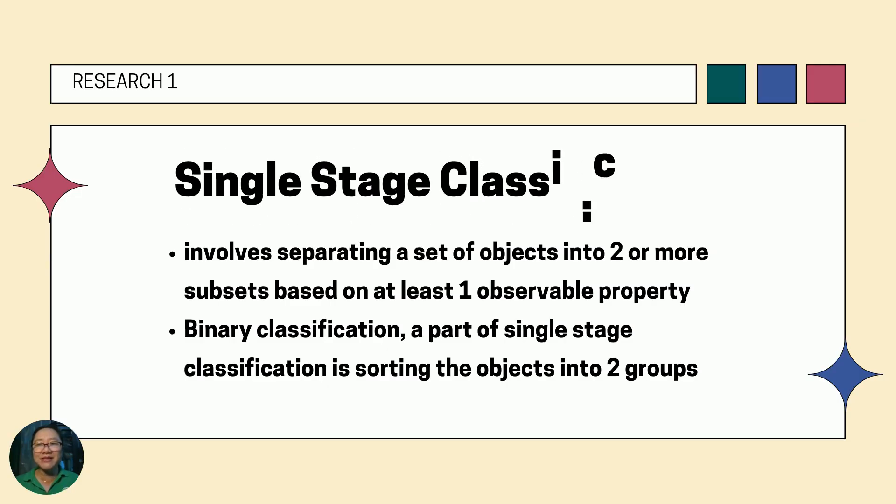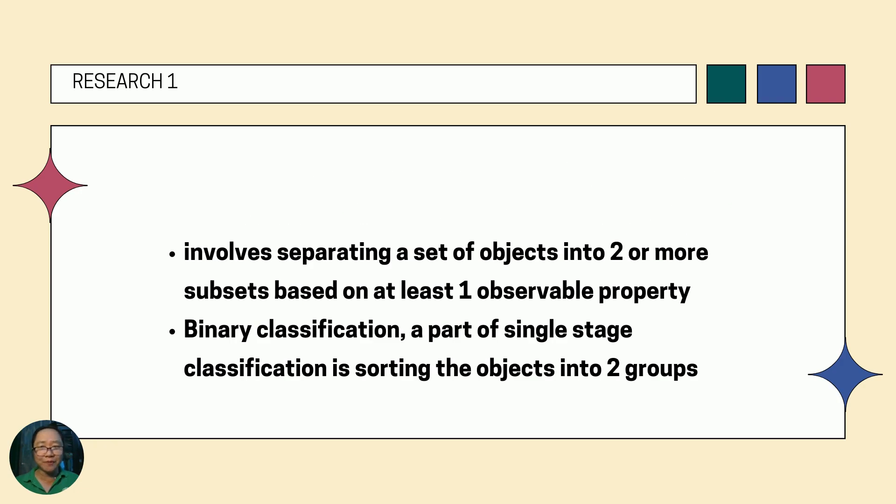Let's talk first about single-stage classification. It involves separating a set of objects into two or more subsets based on at least one observable property. Binary classification, a part of single-stage classification, is sorting the objects into two groups.